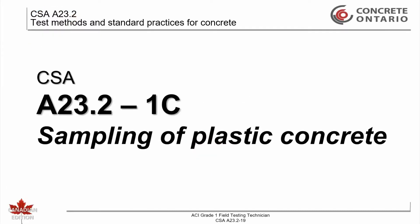CSA A23.2-1C: Sampling of Plastic Concrete. This test method specifies the procedures, locations, and sample size required to obtain a representative sample of fresh concrete from a truck agitator or mixer. This training video addresses sampling done to perform tests on fresh concrete or to cast fresh concrete into molds used for tests on hardened concrete. The results of these tests are used to determine the quality of concrete and to assess its traceability to the structure it represents.